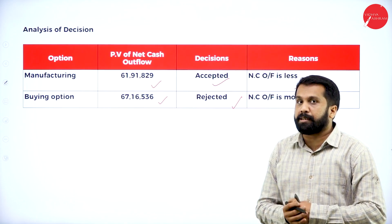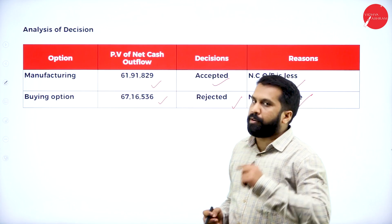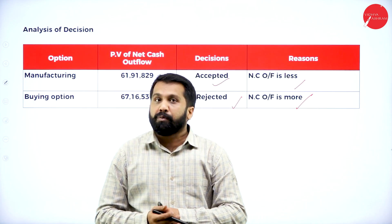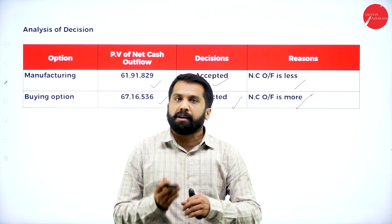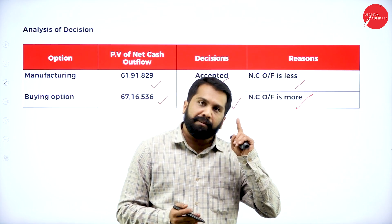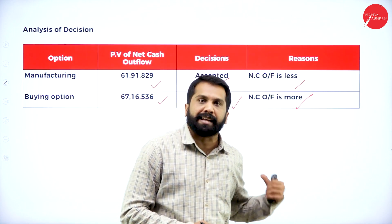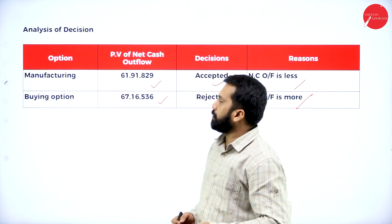Manufacturing option: 61 lakh. Buying option: 67 lakh. Manufacturing is lower — accepted; buying is higher — rejected. This is all you are supposed to do for make or buy. You now understand the difference between make or buy in normal management accounting versus taxation.